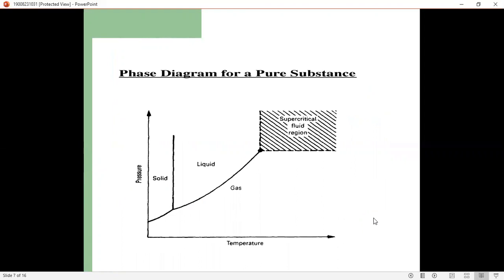This is the pressure and this is the temperature - critical pressure and critical temperature. Here exists the liquid, and the supercritical fluid exists between the liquid and the gas phase. You can see clearly.